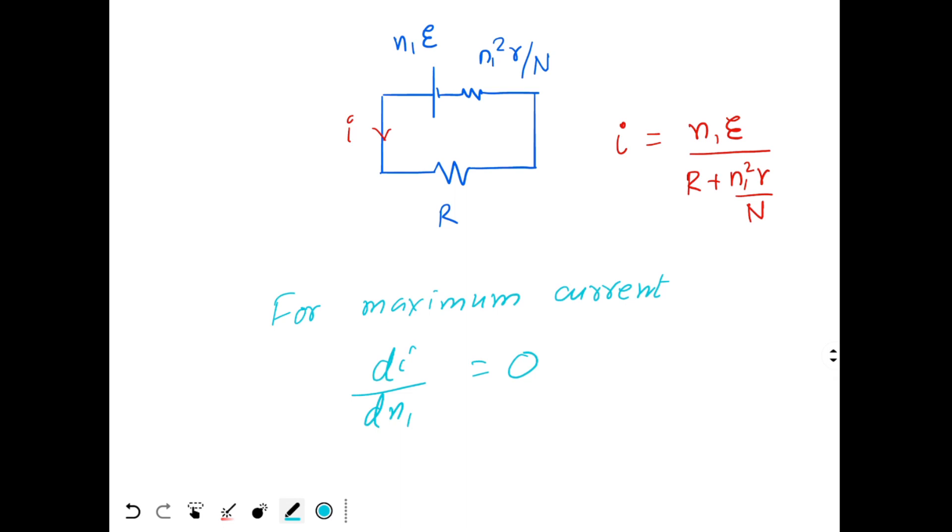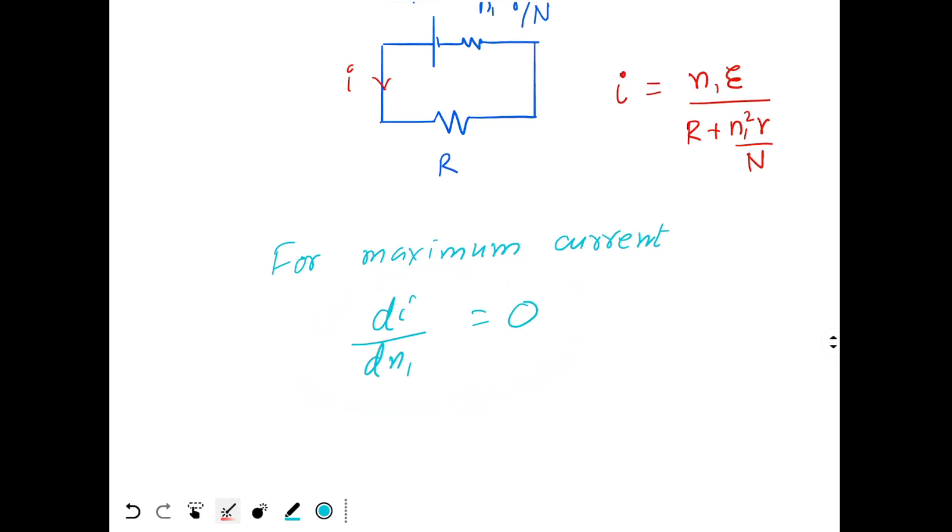All I have to do is differentiate I with N1 and make it equal to 0. This gives me maxima or minima. But since the question is asking maxima, so obviously this should give me a maxima situation. So I will not check for the double derivative. I will just put the single derivative and write the condition as having maxima.